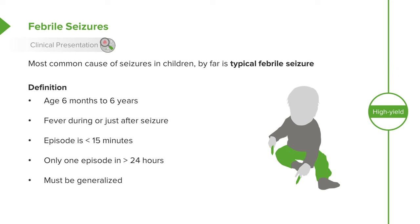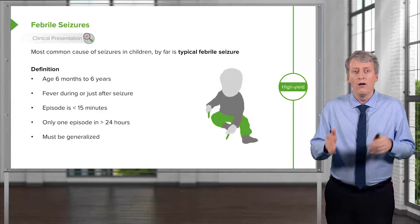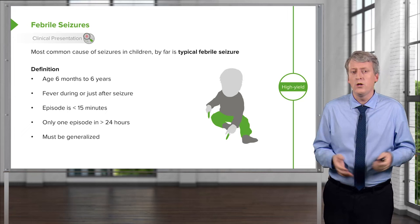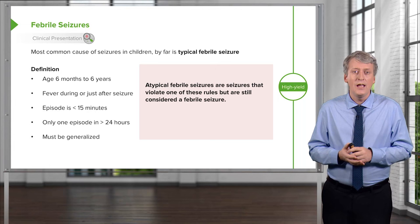If the child meets all of these criteria, this is a typical febrile seizure and no workup is necessary. For many of us caring for children, if we see this child recover and looking better, we're going to send them home without doing anything. The criterion I allow to be violated most is one episode in 24 hours — it's common for febrile seizures to have two or three quick episodes.